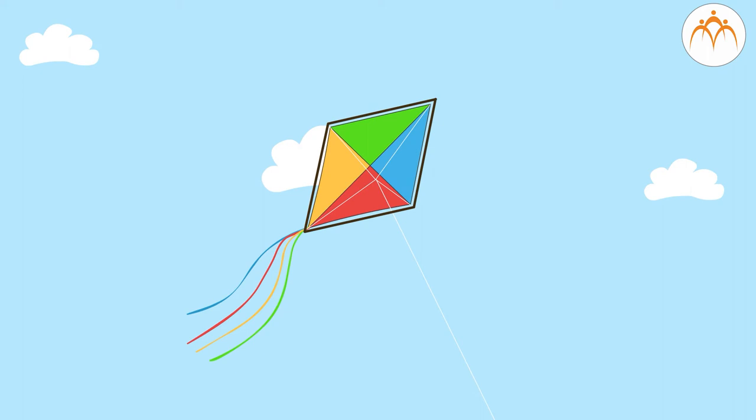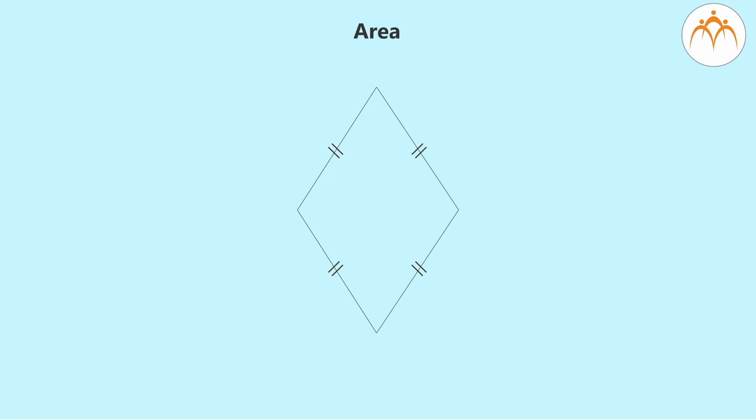What are the properties of a rhombus? All sides are equal. The diagonals are perpendicular to each other and bisect each other. A, B, C, D is a rhombus. The diagonals intersect at O.